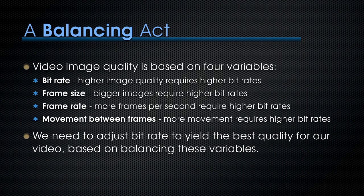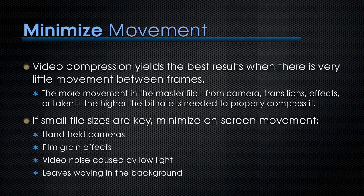We need to adjust the bitrate to yield the best quality for our video by balancing these variables. Video compression yields the best results when there is very little movement between frames, or where a large amount of pixels don't change. The more movement in the master file — from camera, transitions, effects, or talent — the higher the bitrate needed. If small file sizes are key, minimize on-screen movement: don't use handheld cameras, don't add film grain effects, remove video noise caused by low light, and avoid backgrounds like waving leaves.